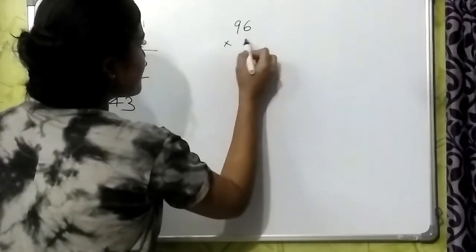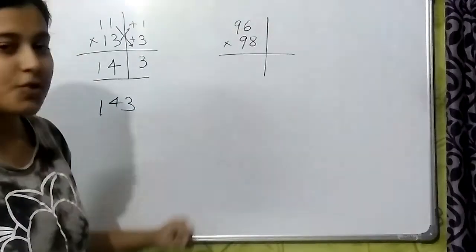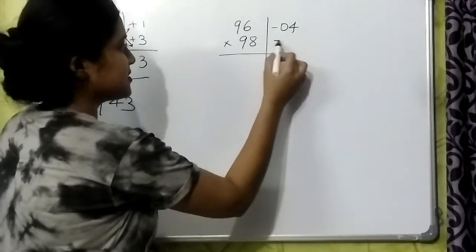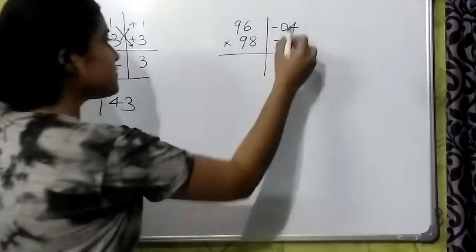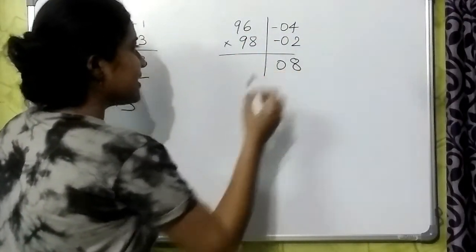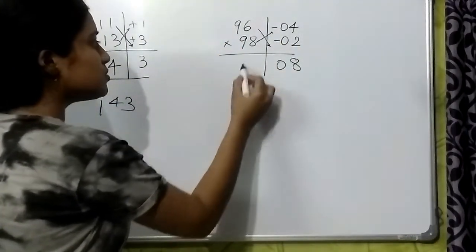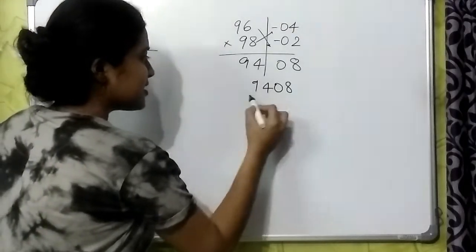We will take numbers which are close to 100. How much do they differ from 100? 100 minus 4 is 96 and minus 2. We will multiply these two numbers. Minus 4 into minus 2, 8. And we will do cross addition. 96 minus 2, 94. 9408 is the answer.